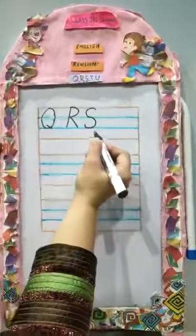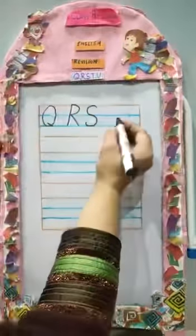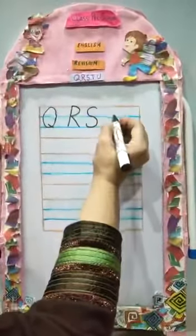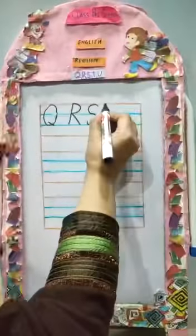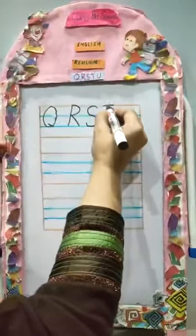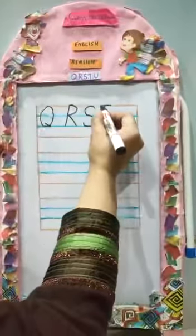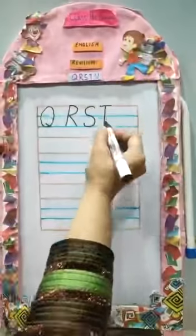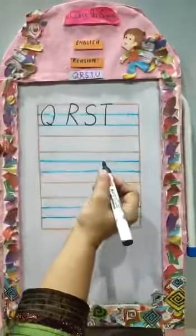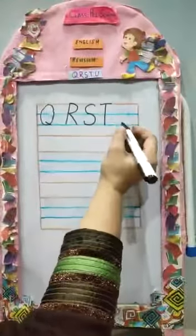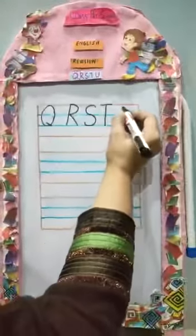S — the sound of S is 'S' as in Sun. T — the sound of T is 'T' and T stands for Tree.